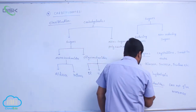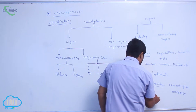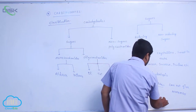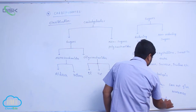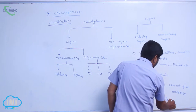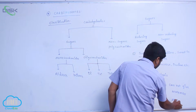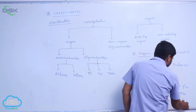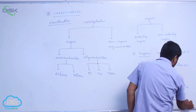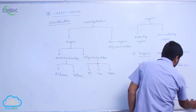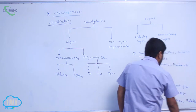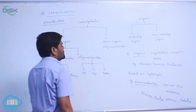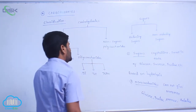The examples for monosaccharides are glucose, fructose, mannose, galactose, etc. These sugars are known as monosaccharides.